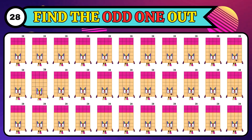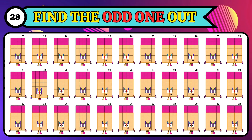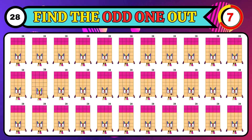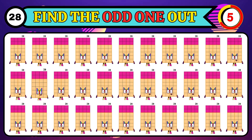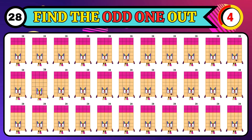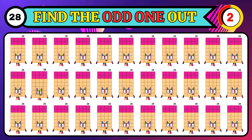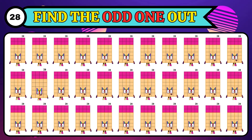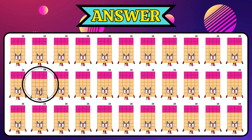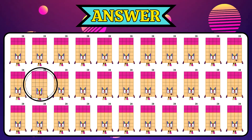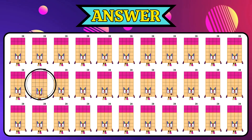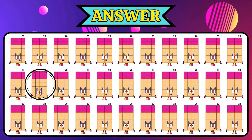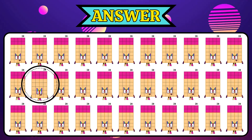Where is the odd 28? Awesome! The odd 28 is in the second row, second column.